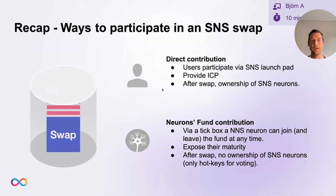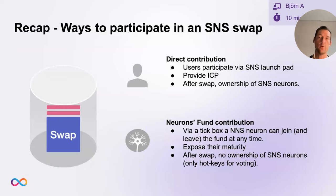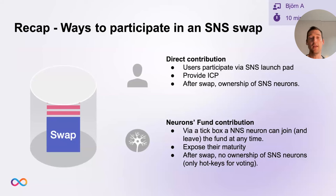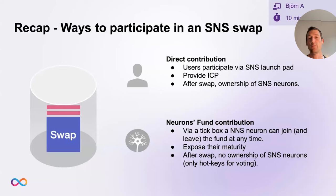As a quick recap, there are two avenues to participate in an SNS swap. The primary avenue is direct contribution — any user can participate via the SNS launch pad, essentially providing ICP as input. After a successful swap, you end up as an owner of SNS neurons. The second avenue is the Neurons Fund. If you have an NNS neuron, you can tick a box in the NNS front-end app to join or leave the fund at any time. If you tick it, you expose the maturity earned with that neuron to future SNS launches. After a successful swap, you don't become an owner of SNS neurons — instead you get hotkeys so that you can vote, but the ownership is not with you.